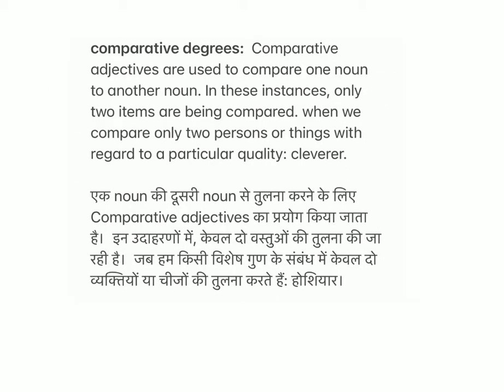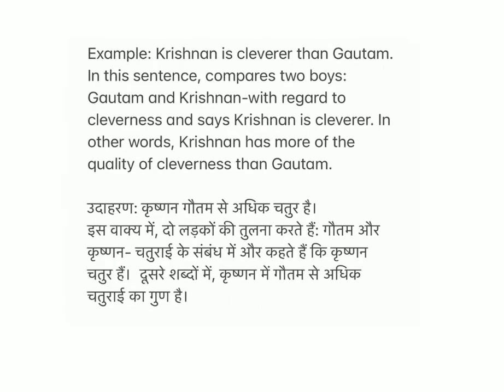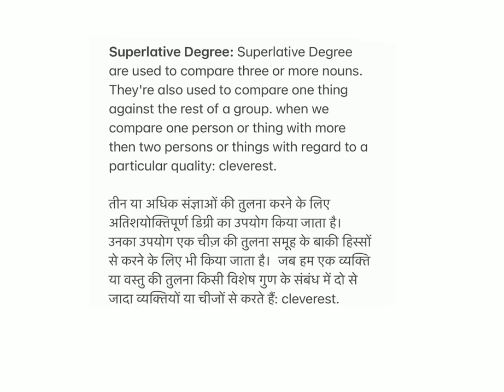Comparative degree: comparative adjectives are used to compare one noun to another noun. In these instances, only two items are being compared. When we compare only two persons or things with regard to a particular quality. Example: Krishnan is cleverer than Gotham. This sentence compares two boys, Gotham and Krishnan, with regard to cleverness, and says Krishnan is cleverer – in other words, Krishnan has more of the quality of cleverness than Gotham.